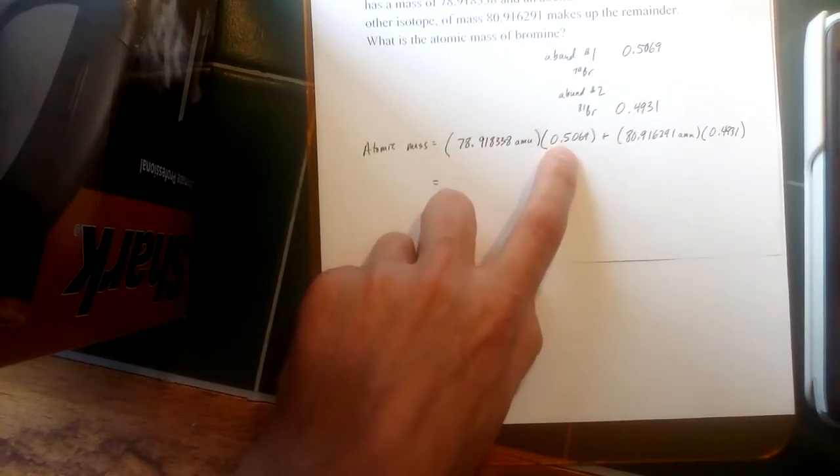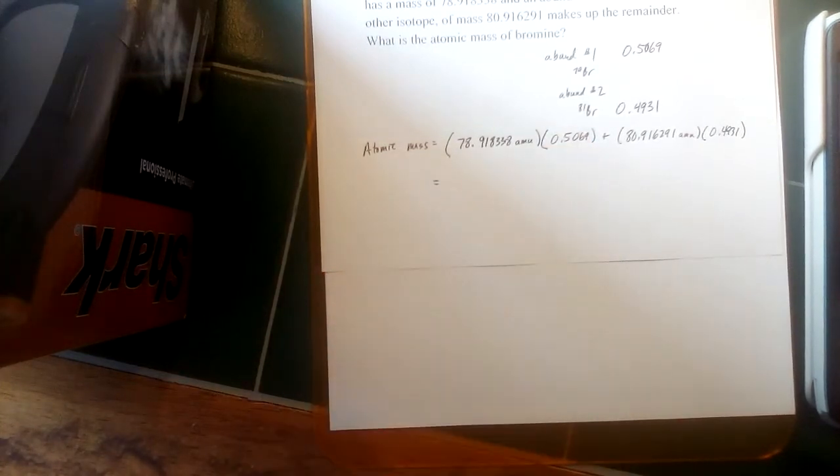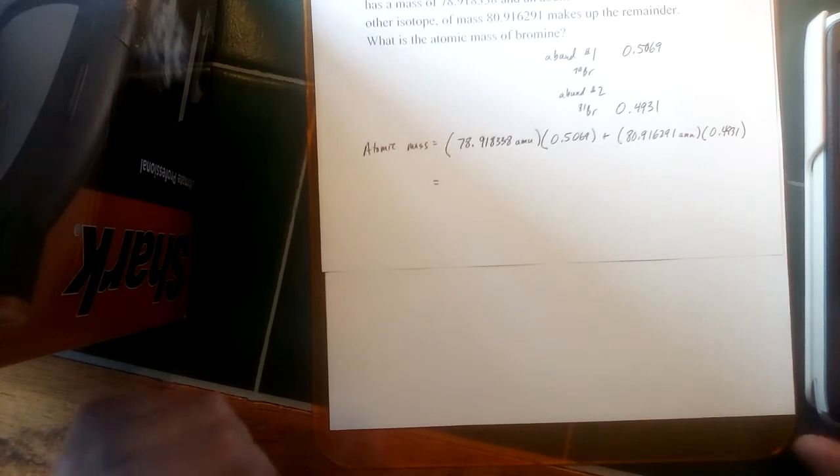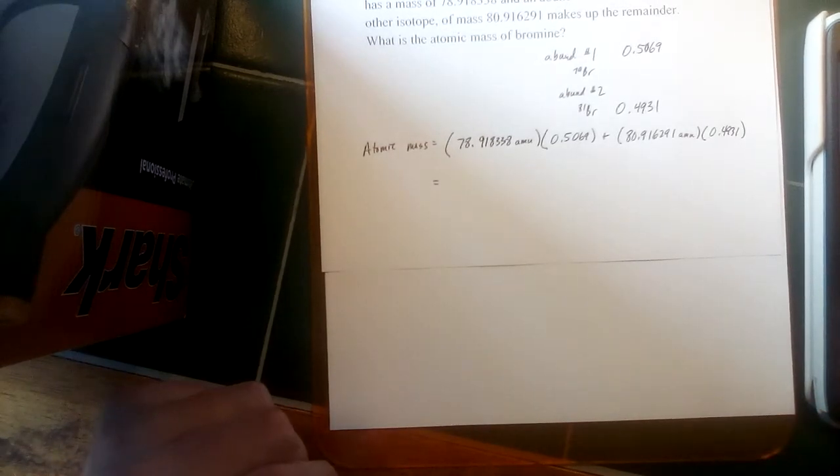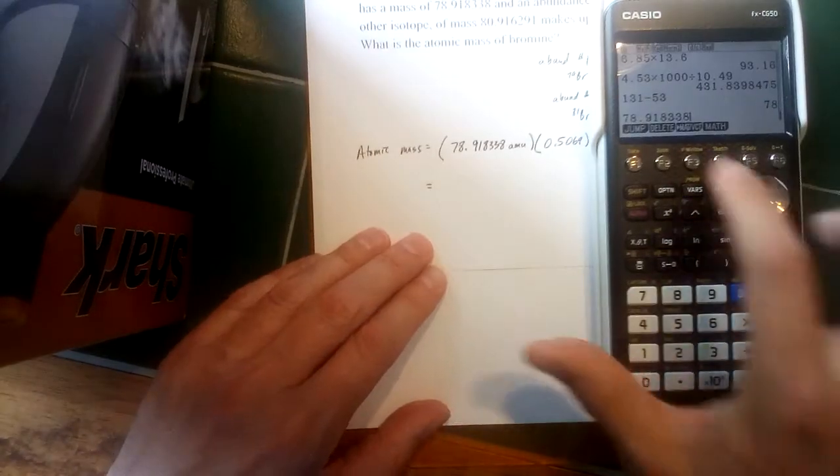Okay, now if we multiply both of these terms out, we've got eight significant figures in our mass but only four in our abundance. So we want to keep that in mind that we're going to be significant to four places. But again, like we talked about in class, we don't round till we get to the end, just on the chance that rounding will change our answer.